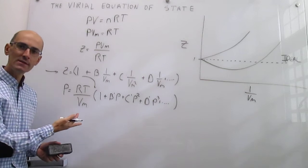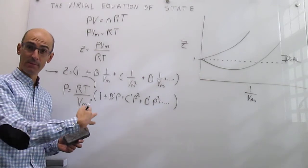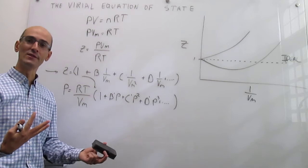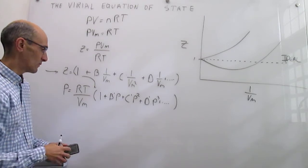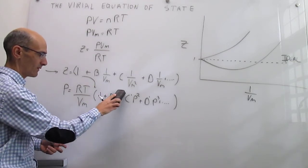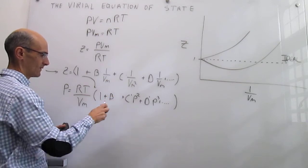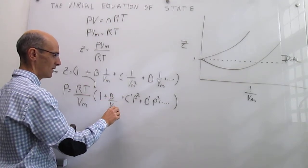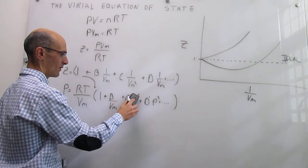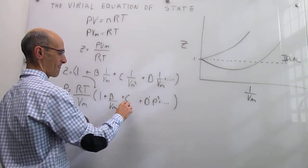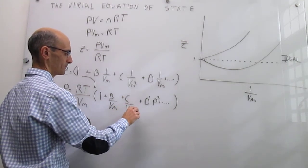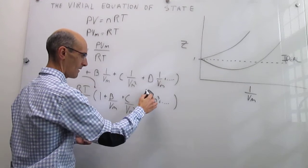Then you will have something like C over Vm squared, and here you will have inverse of Vm cubed. So your equation of state, if you decide to expand this equation in terms of the inverse of the molar volume as opposed to the pressure, will be very similar then.